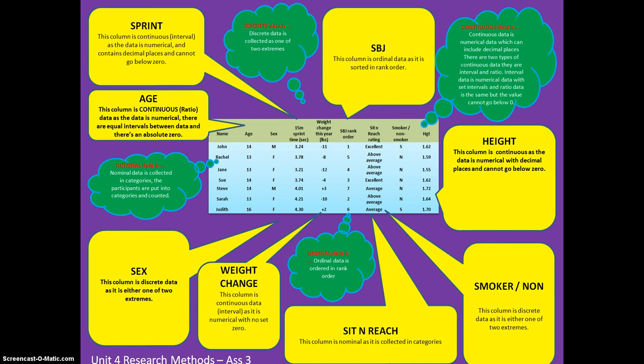Here is an example of a table with lots of different data. In the age column, this is continuous data — specifically ratio data — as the data is numerical, there are equal intervals between the data, and there is an absolute zero, as we can't have a negative age. The sex or gender column is discrete data, as you can only be male or female. The sprint column is continuous data — it's numerical, contains decimal places, and cannot go below zero, so that should actually say ratio data, as you can't run 15 metres in a negative amount of seconds.